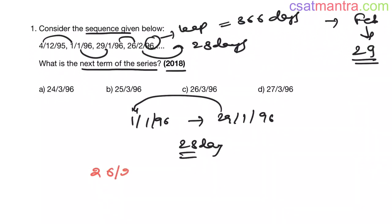Now to find the next term of the series, we have to add 28 days to 26/2/96. So adding 28 days, I am adding 3 more days to complete February, now we are left with 25 days. That means 25th March 96 will be the next term my friends.